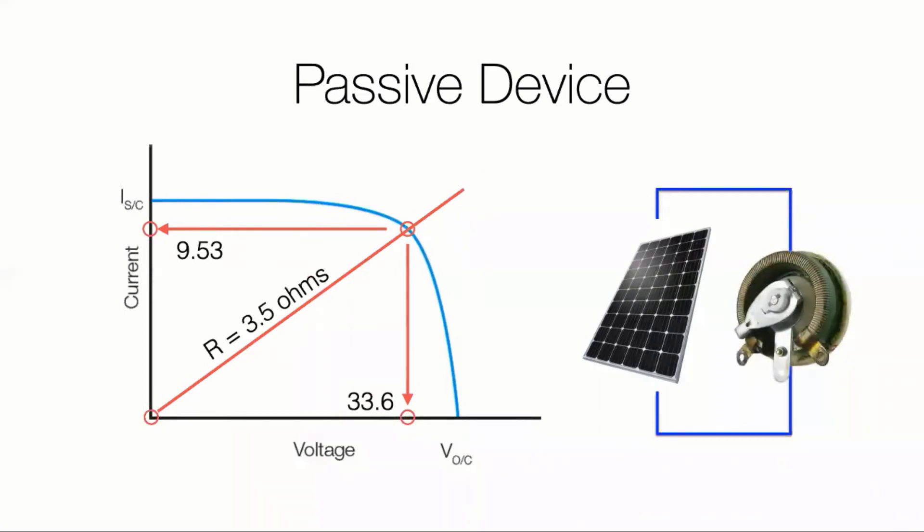For example, in order to operate at our max power point on the knee of this particular curve, I would want a resistor of about three and a half ohms. That would give me the maximum power from this particular module.